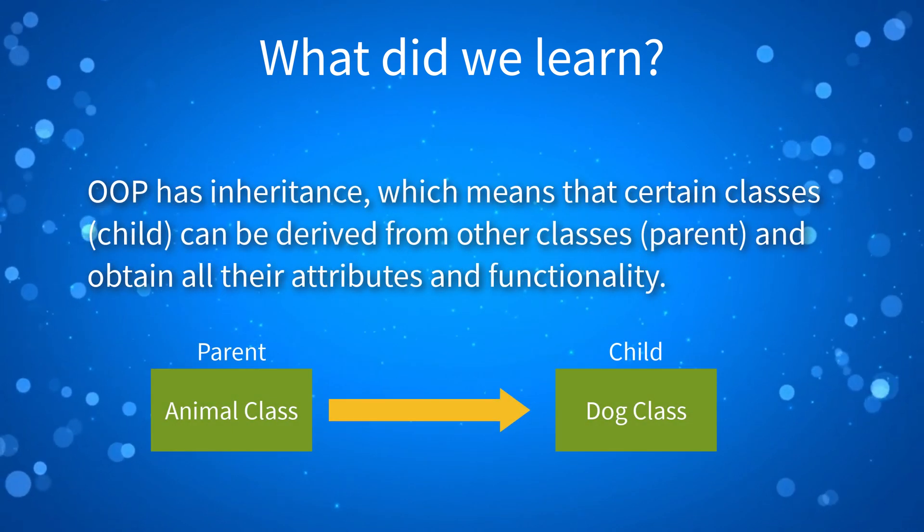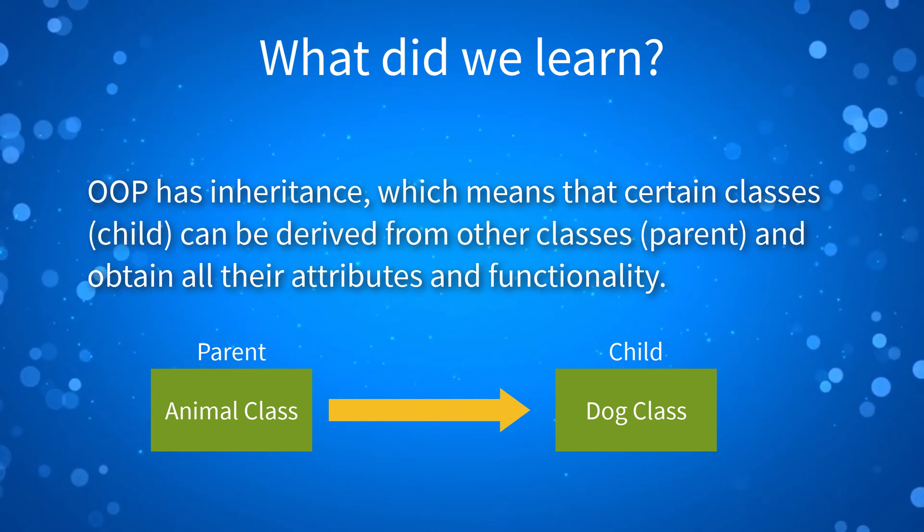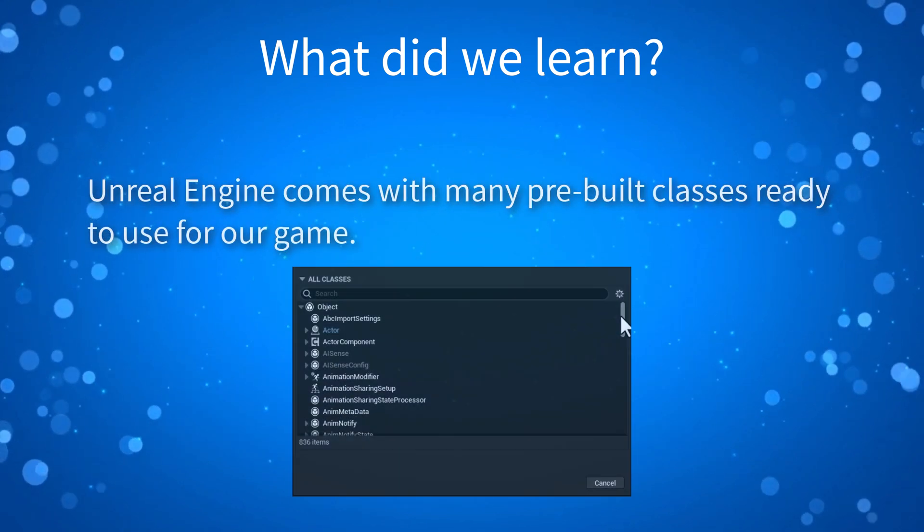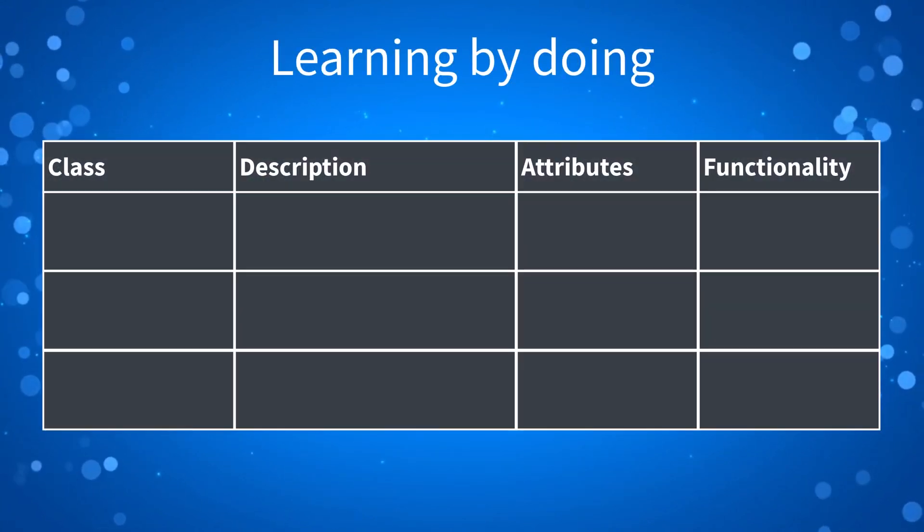If you want to practice what you have learned, here is an additional exercise. Come up with three other examples for classes you can create by using the principles of inheritance. Use the table below to help you define them. And that's it. That's all for this lesson. If you have any questions, leave them in the comments section below. Also, don't forget to join our Discord and use the support channel there as well. Thanks for watching and I'll see you in the next lesson.